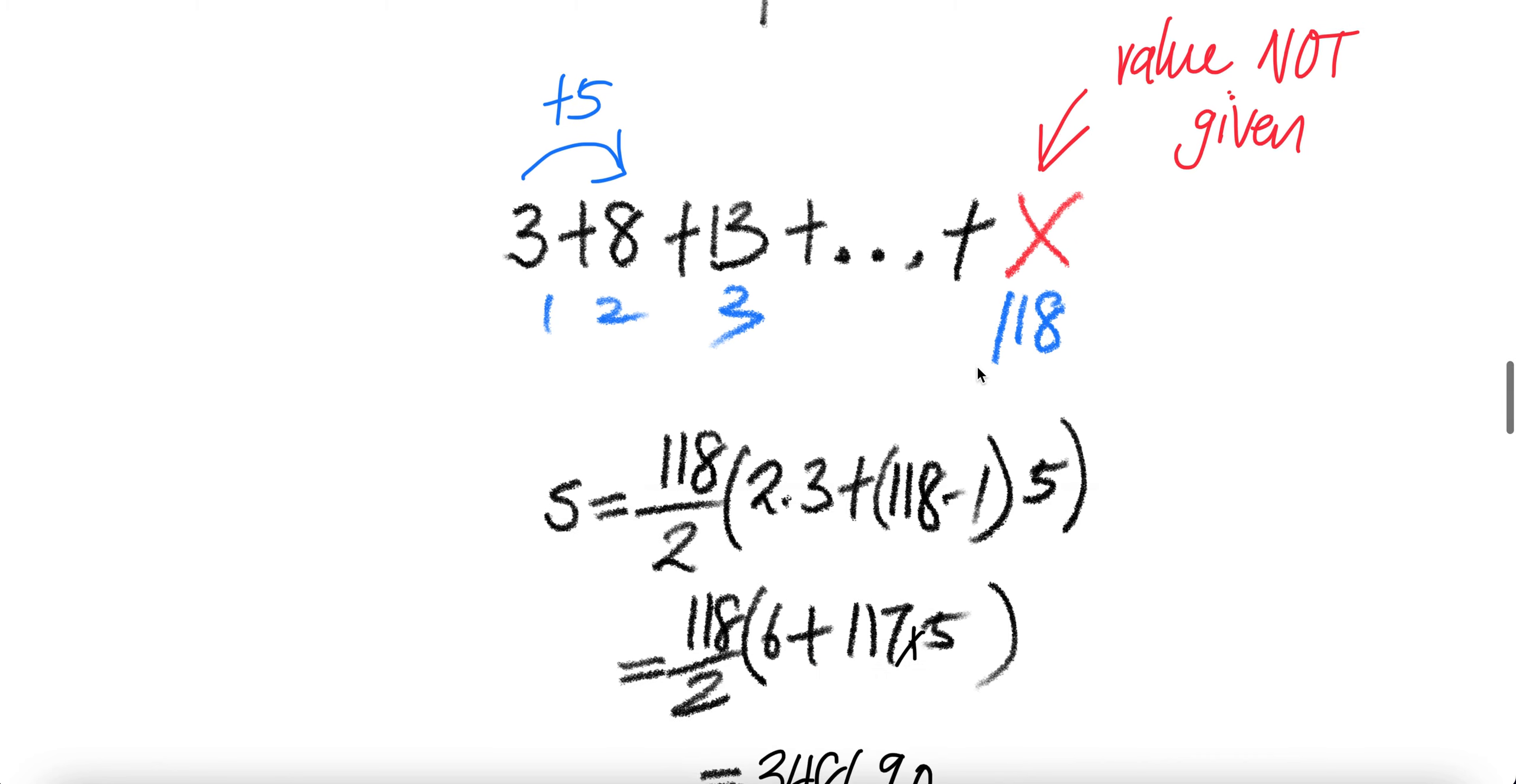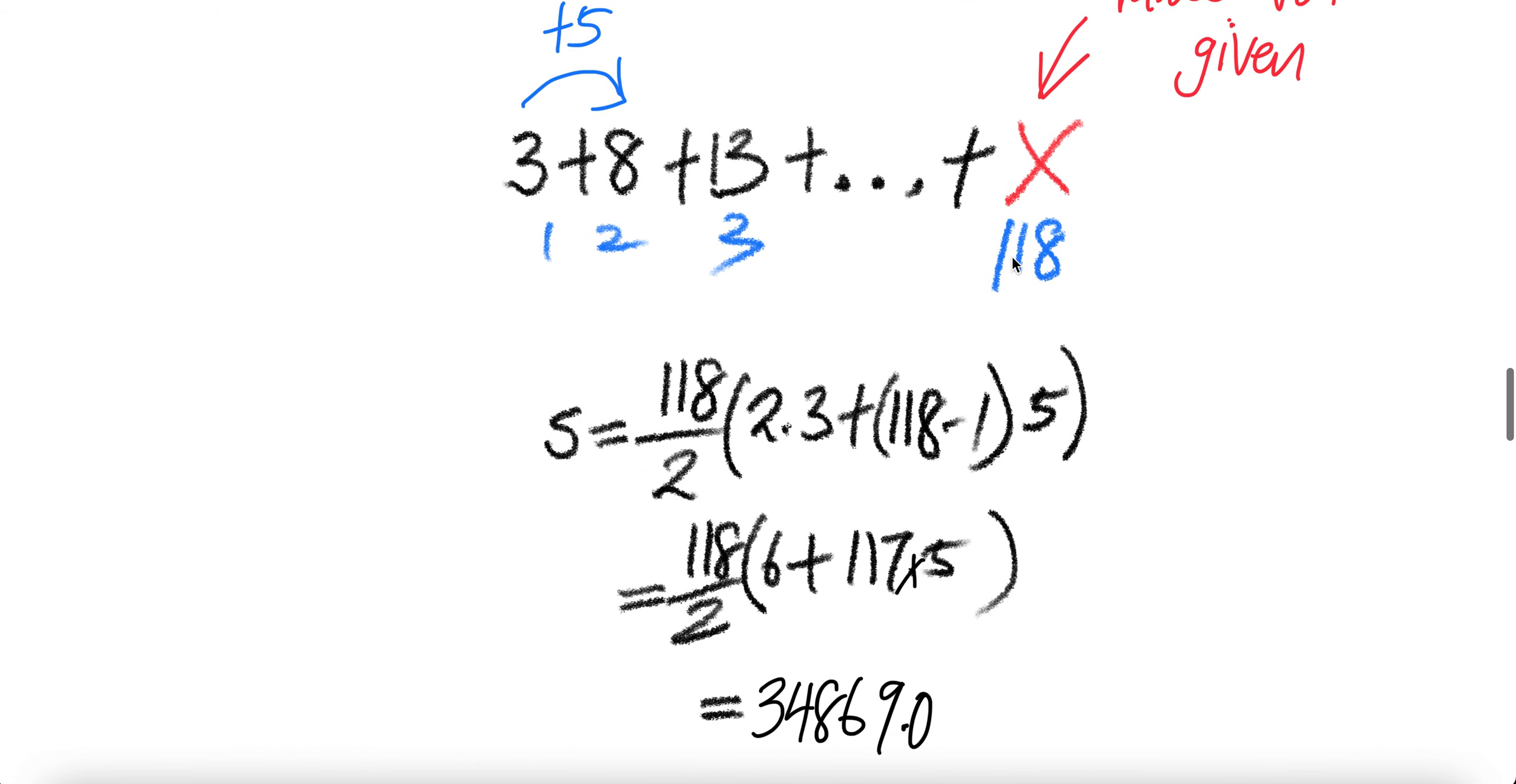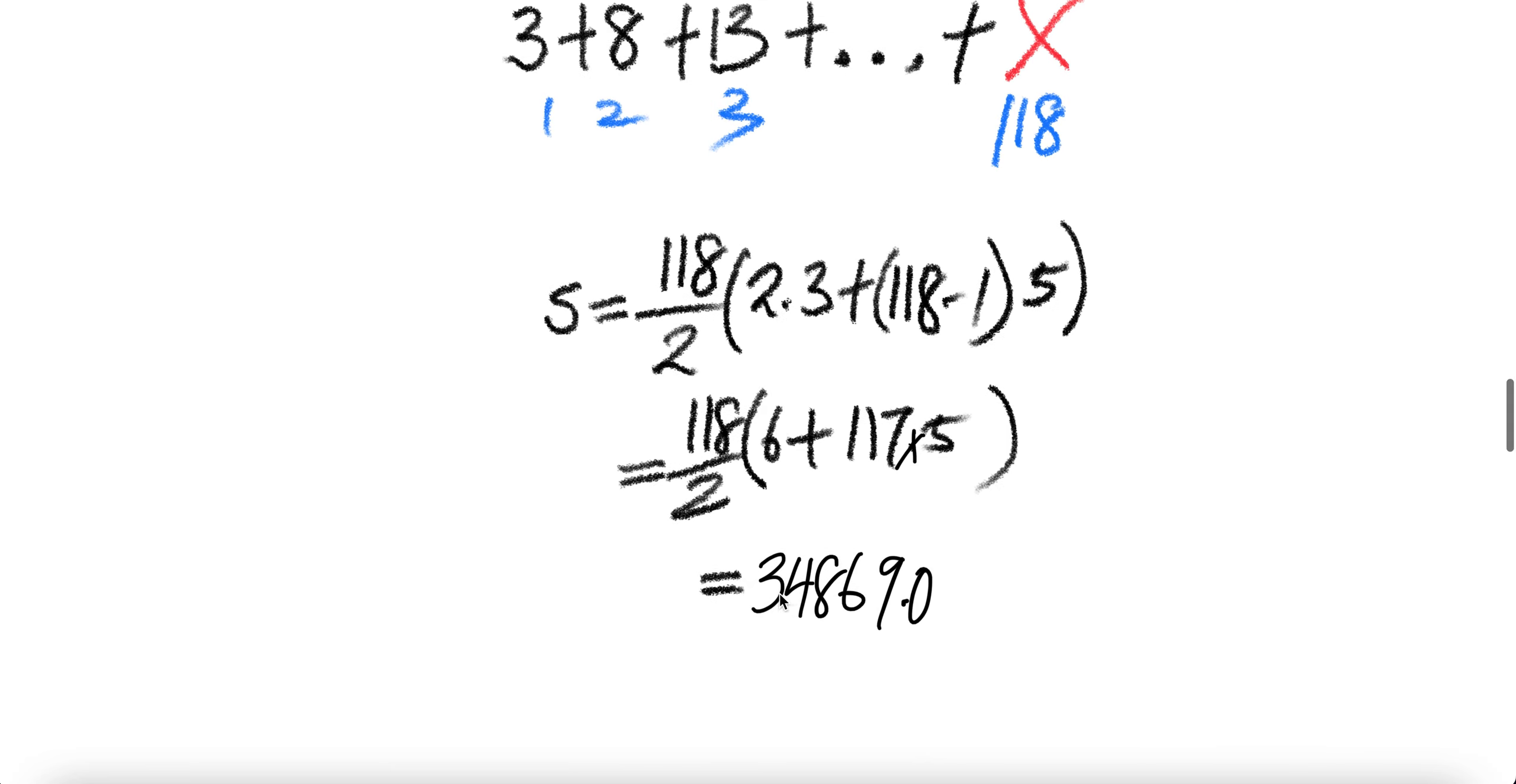So we are going to use this formula, this one. So it will be what? Number of terms will be 118 divided by two times twice the first term three plus the N minus one times the common difference five. Then this one, you know how to do is the sum is 34,869.